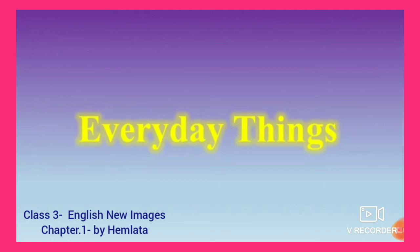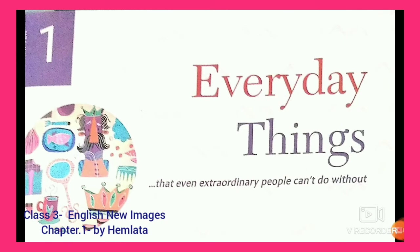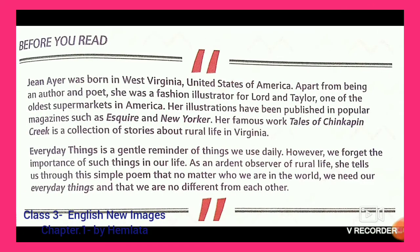Let's go through the chapter Everyday Things. Even extraordinary people can't do without this, because to fulfill our requirements, everyday things are necessary. Without these things, we cannot fulfill our requirements in our daily life. So then let's start with the poem. Before you read the poem, we can go through with the poet who has written the poem, Everyday Things.